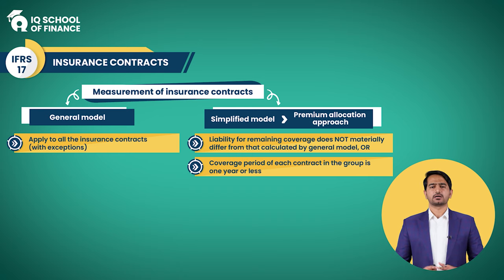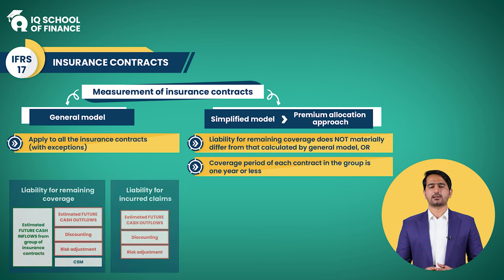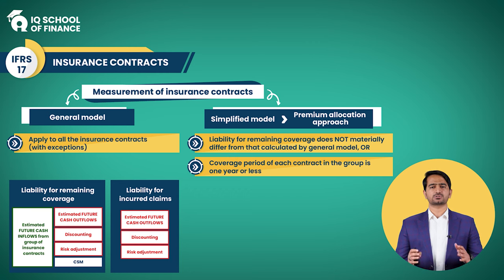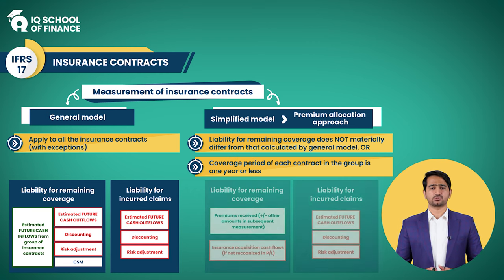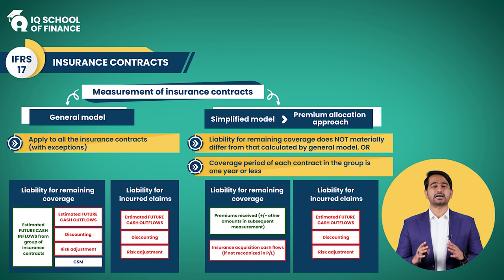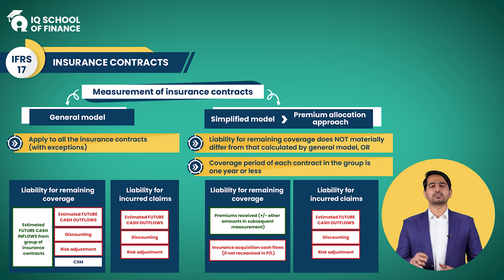Under the general model, you calculate the insurance contract liability by adding the liability for remaining coverage — referring to the future — and the liability for incurred claims. Under the premium allocation approach, the process looks similar: you still combine the liability for remaining coverage and the liability for incurred claims. However, the key difference is that the liability for remaining coverage is calculated simply based on earned premium adjusted for a few items, without the detailed building blocks. The liability for incurred claims remains the same as under the general model.